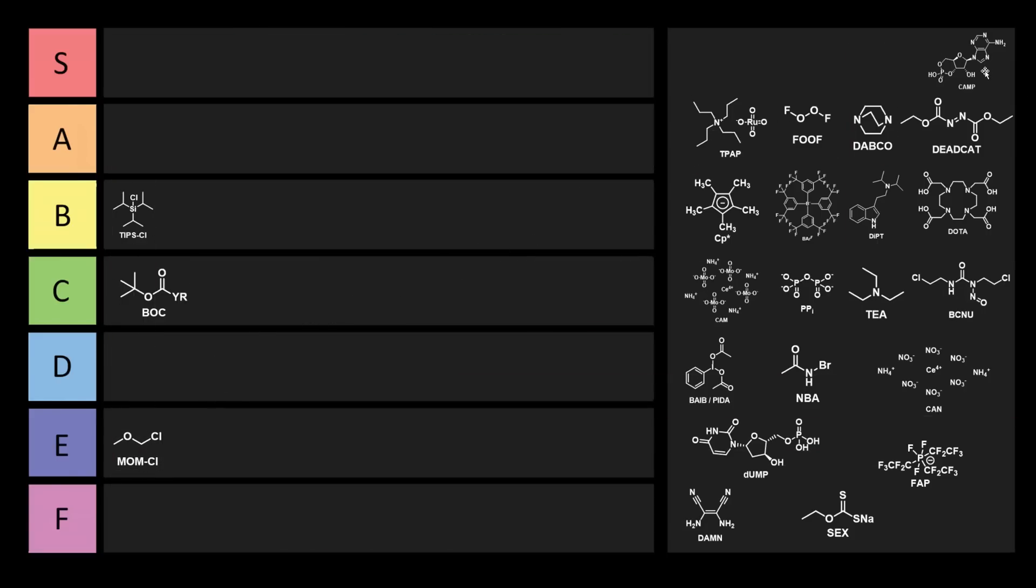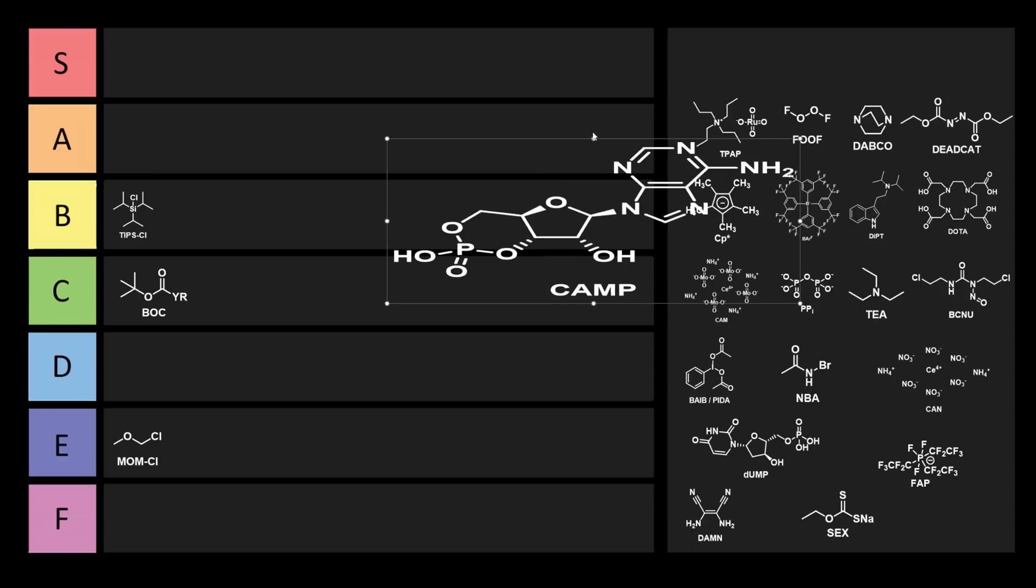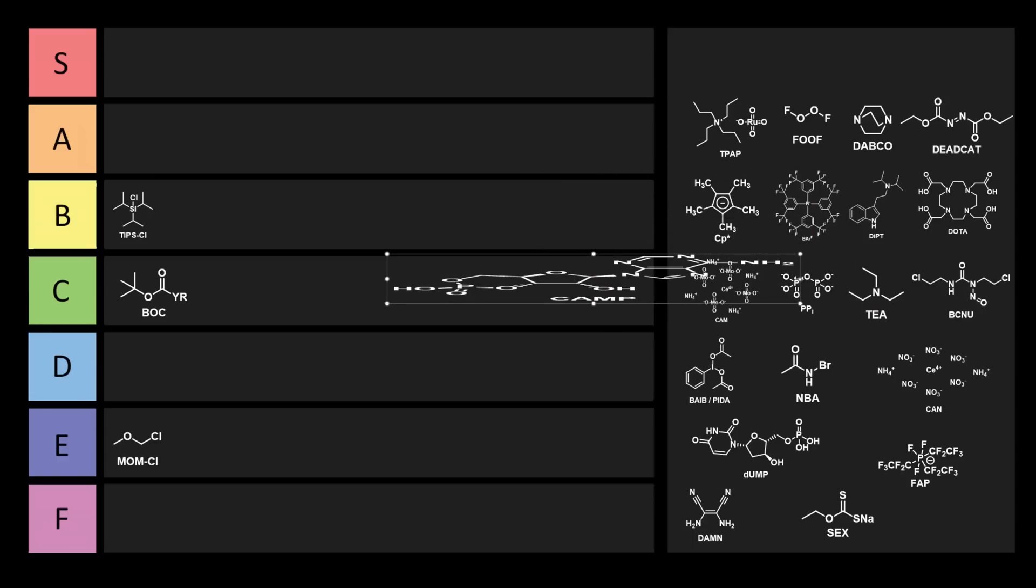Next we have cAMP, cyclic adenosine monophosphate. I'll make it bigger here so you can see it. cAMP is a secondary messenger important in many biological applications and used for intracellular signaling transduction in many different organisms. You might be thinking this belongs in fat camp. Why don't we put cAMP into C tier? It's not too bad.